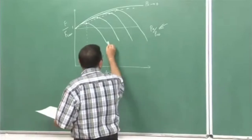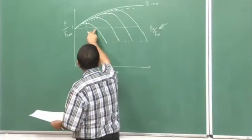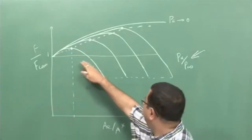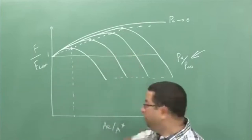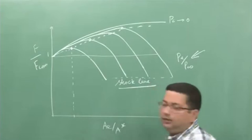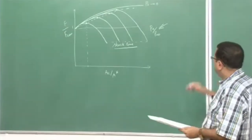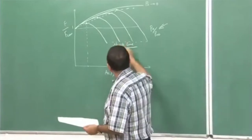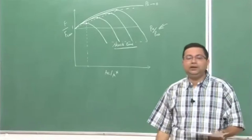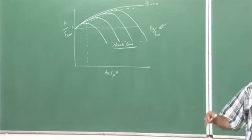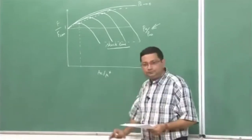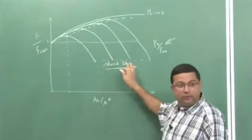Beyond a certain area ratio the thrust decreases below that produced by a converging nozzle, so the diverging portion gives no advantage beyond that point. There is also a shock line at which, for all these pressure ratios, we stop the nozzle operation because a shock either sits at the exit or enters the nozzle, making the flow no longer isentropic. The flow becomes subsonic across the normal shock wave, and although it will match the exit pressure, performance is very poor due to large losses.